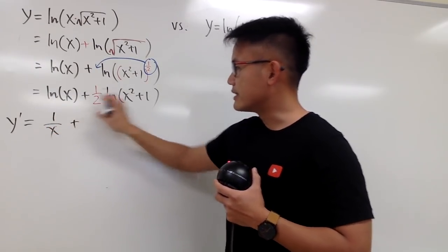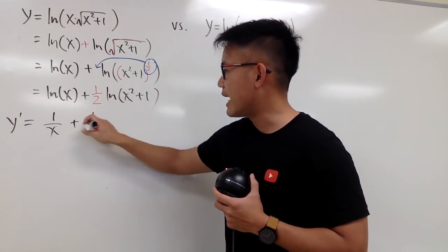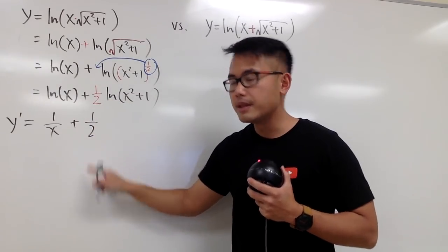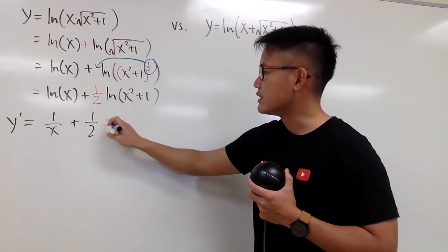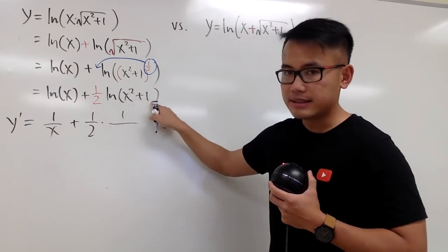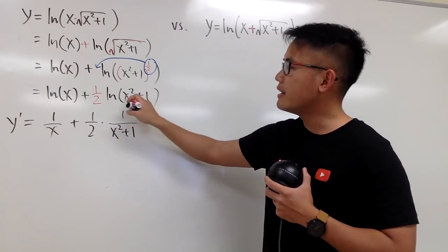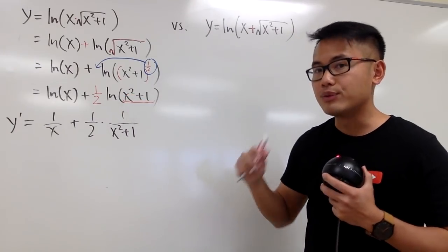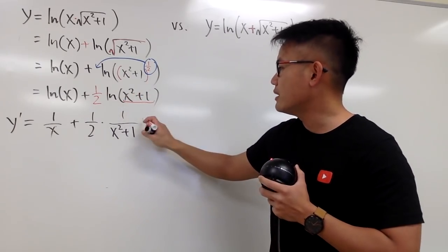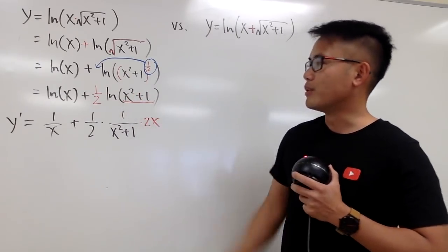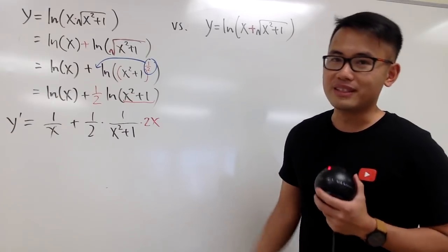And then we add it with the second part. The 1/2 is now a constant multiple, so we keep the constant multiple first. Then we differentiate ln of x squared plus 1. The derivative of this is first 1 over the inside, so it's 1 over x squared plus 1. And then, because of the chain rule, we have to differentiate the inside and multiply. The derivative of x squared plus 1 is 2x, so we multiply by that. So this right here is the expression, and the rest is just combining fractions and simplifying.